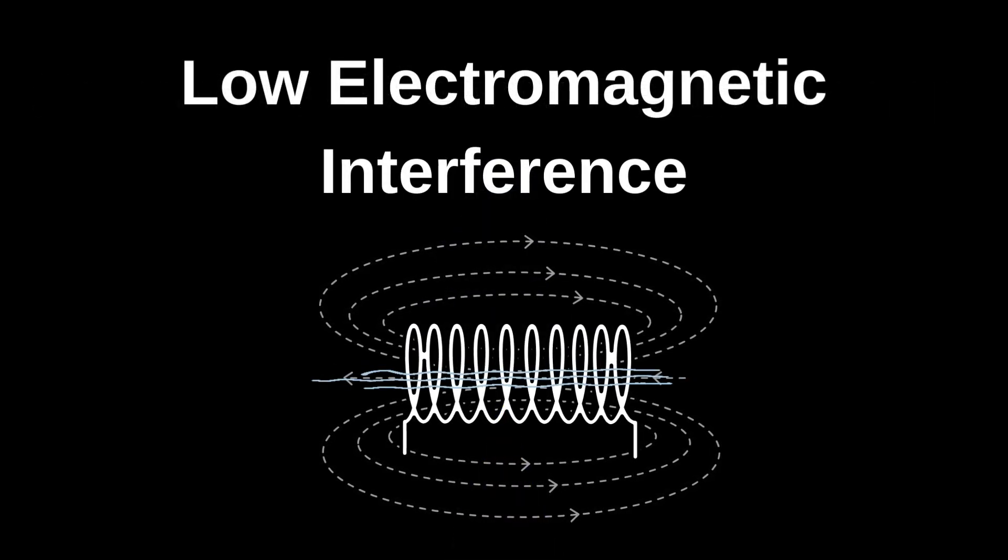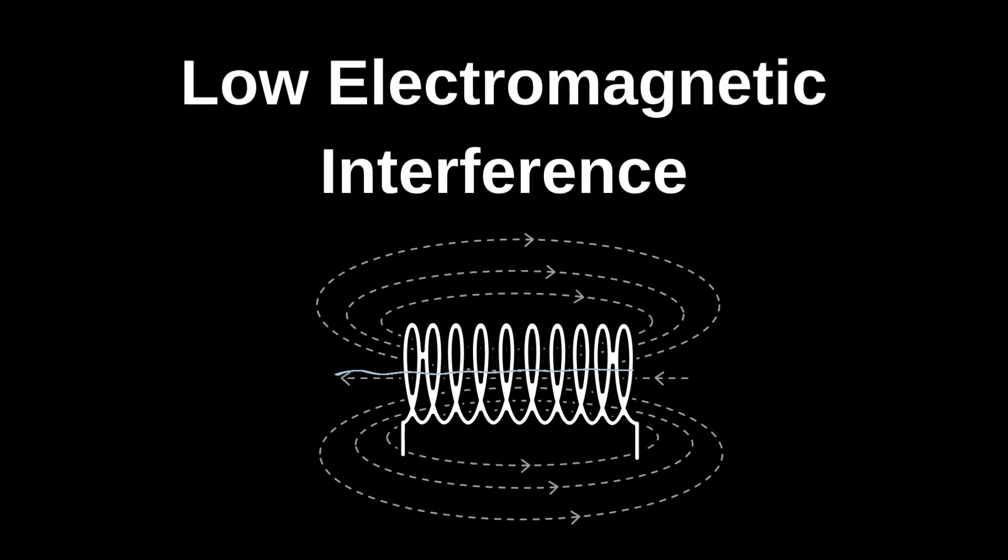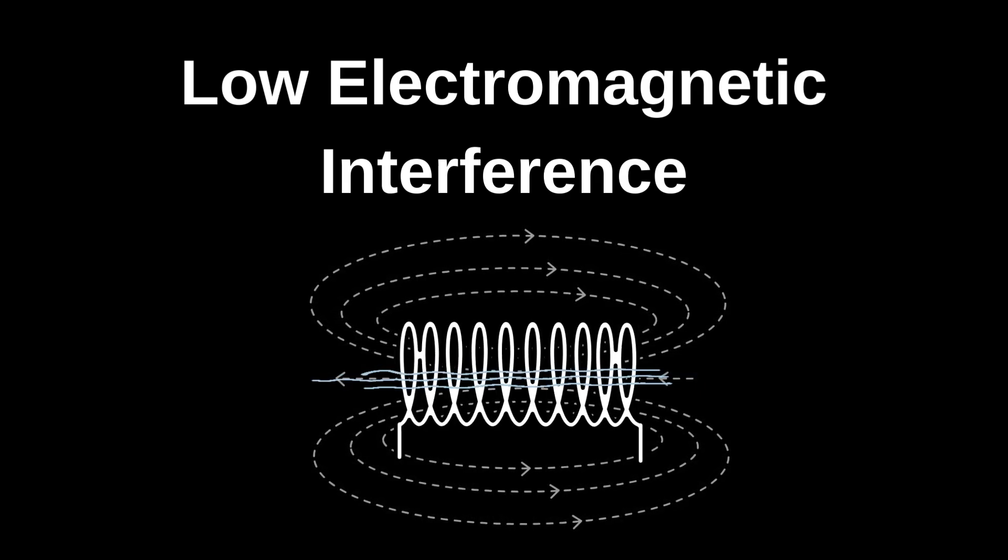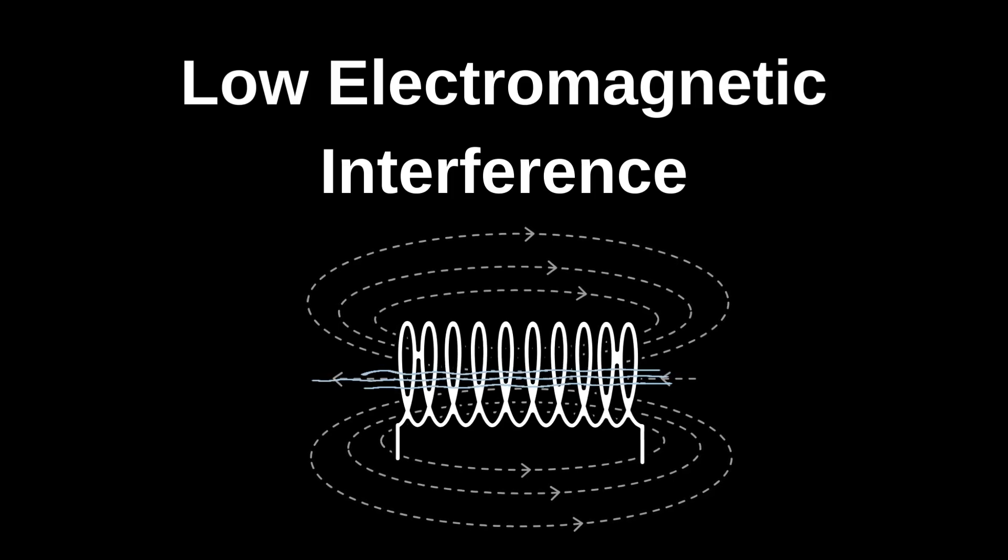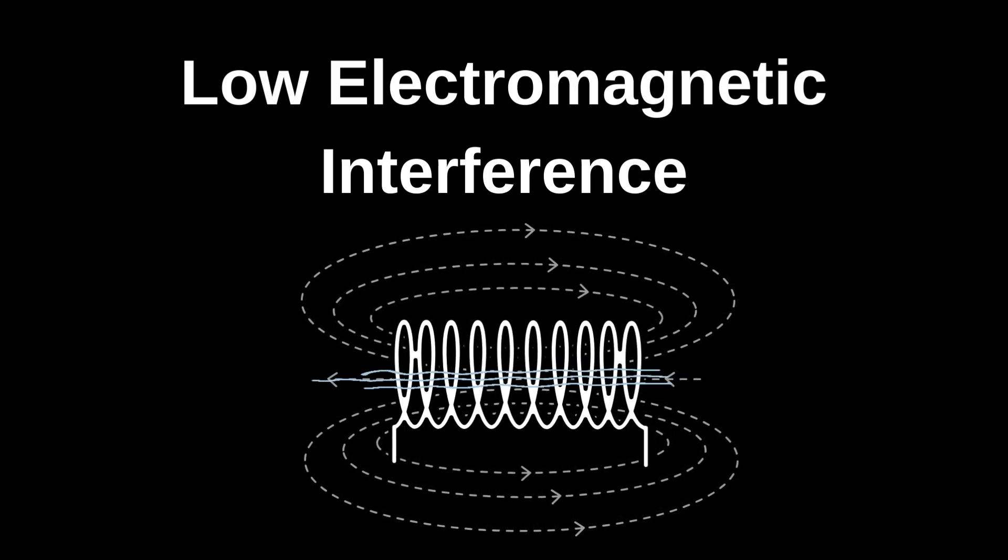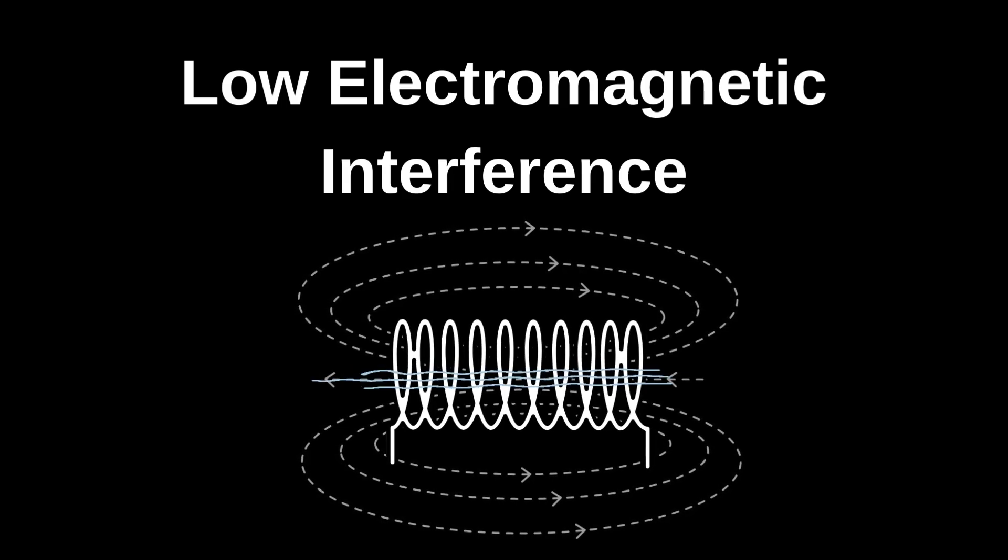And don't forget about low electromagnetic interference. The absence of an iron core means less electromagnetic interference, making coreless DC motors perfect for applications where EMI needs to be minimized, think medical equipment and communication devices.